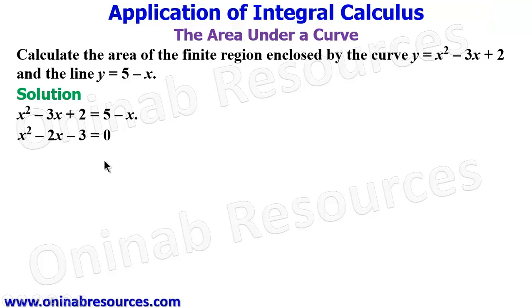So we can then solve this quadratic equation to give us our values for x, which will represent the upper and the lower limits. So we have (x + 1)(x - 3) = 0, where x = -1 and x = 3.